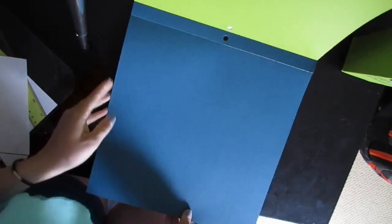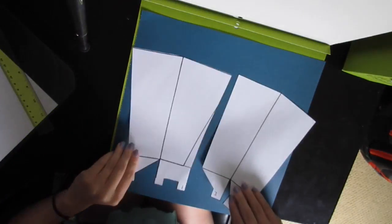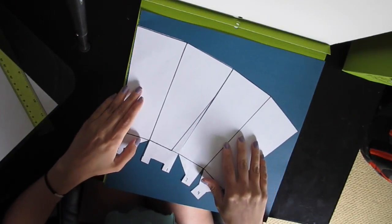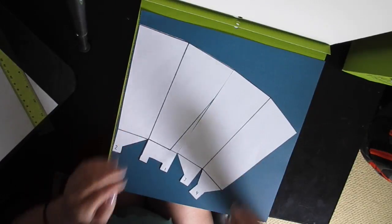The first thing you want to do is pick a color that's right for you. Then put your popcorn box stencil on top of the piece of paper and trace it out.